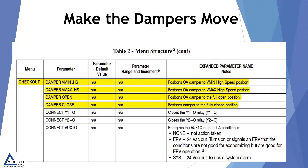I was on a job recently where an inspector wanted to see the dampers move. I went into the checkout mode and moved the dampers. He signed off and left — didn't know whether the economizer was completely set up or set up properly. All he knew was that the dampers moved. So with the checkout menu you can run the economizer through its full range of settings to make sure that it is installed correctly and is operating correctly.